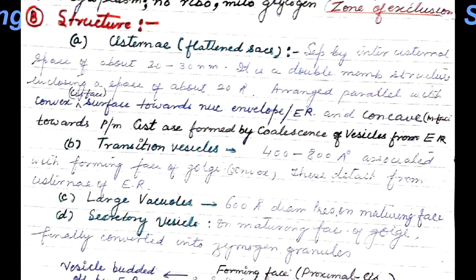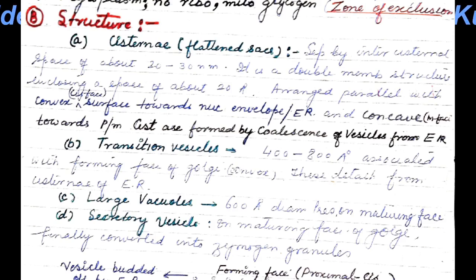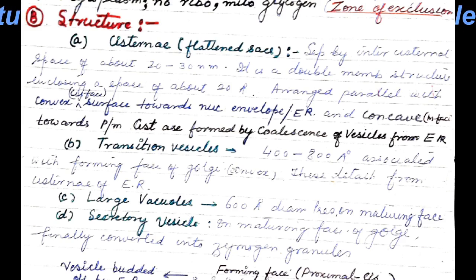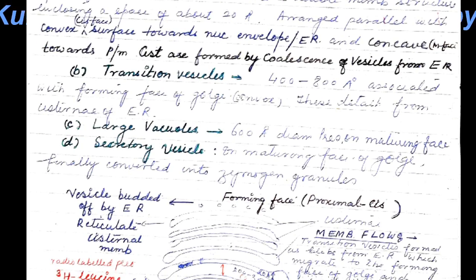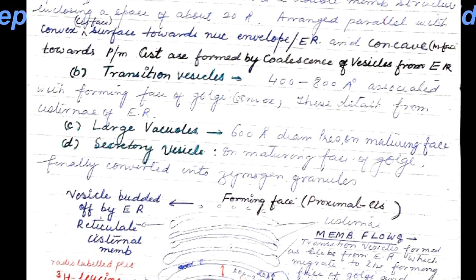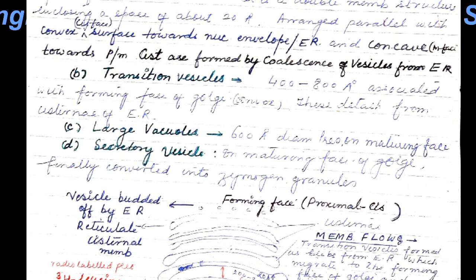Transition vesicles, around 400 to 800 angstroms in size, are associated with the forming face of the Golgi, which is the convex face. They get detached from the cisternae of endoplasmic reticulum. Around 600 angstrom large vacuoles are present on the maturing face. Small secretory vesicles on the maturing face tend to get converted into zymogen granules.